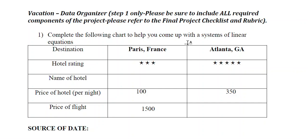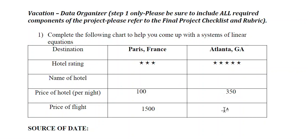First we need to come up with some data. You can't use my data because I'm just making up some numbers, so you need to get online, do an internet search, and find your own data — determine how much you would pay for a three-star hotel in Paris, France, and how much it would cost to fly to Paris from Atlanta. Since we live in Fulton County, we would not be flying to Atlanta, so we only need to pay for a hotel there — a five-star hotel.